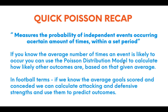A very quick recap for those who haven't seen anything before — I'd recommend watching the previous videos. The Poisson distribution model measures the probability of independent events occurring a certain number of times within a set period. Basically, if you know the average amount of times something is likely to happen, you can use the model to calculate how likely other outcomes are. In football terms, if we know the average goals scored and conceded by all teams, we can calculate their attacking and defensive strengths to predict game outcomes.